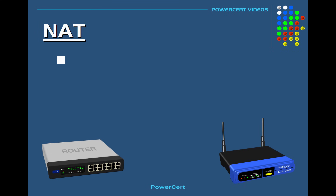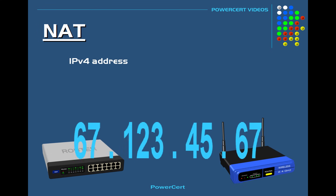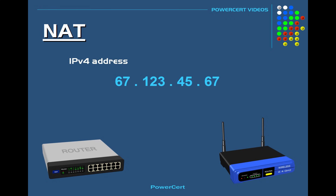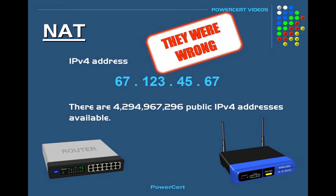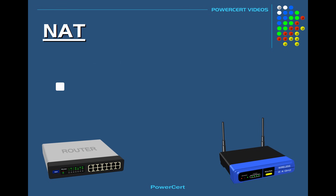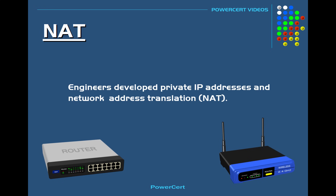When the IP version 4 address was created, engineers didn't realize how big the internet would become. Even though there were over 4 billion IP version 4 addresses available, the engineers thought that would be enough — but obviously they were wrong. So in order to prevent a shortage of public IP version 4 addresses, engineers developed private IP addresses and network address translation.